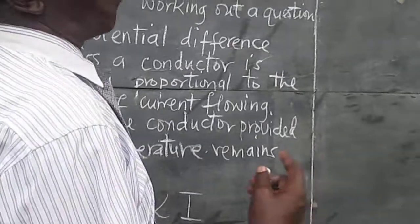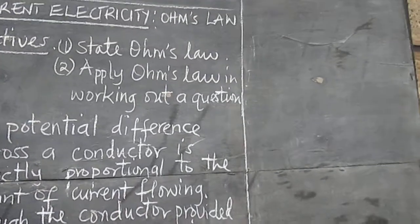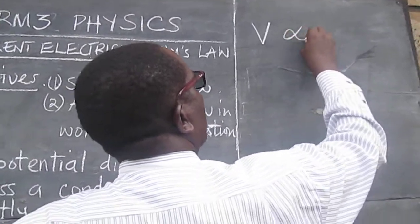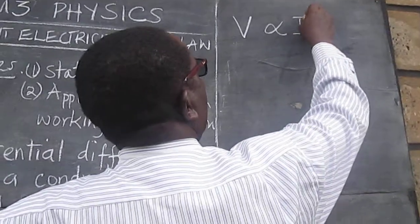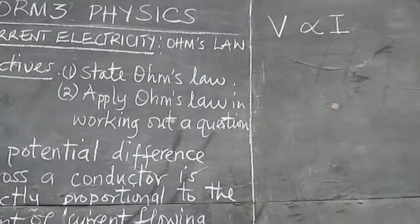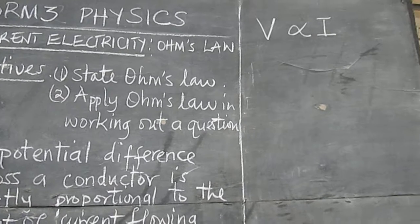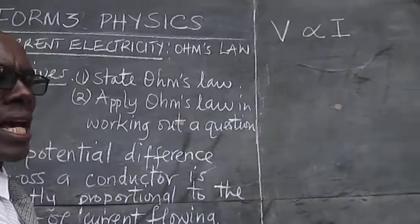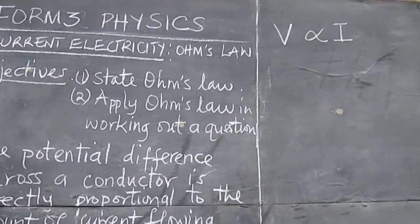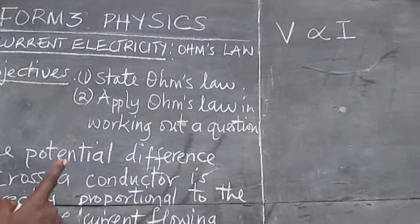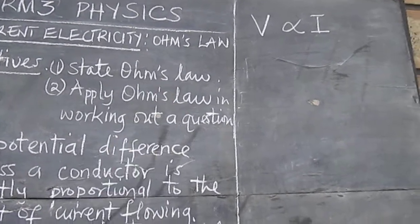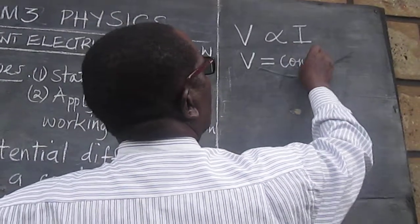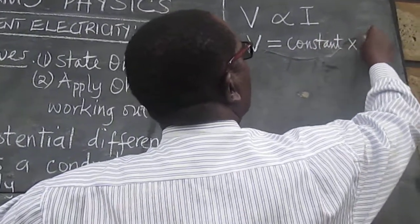We are going to work that out mathematically. In mathematics, when we have direct variation, we can replace the proportionality symbol with an equal sign, but when we do that we introduce a constant. So the same statement can now be written as V equals constant times I.